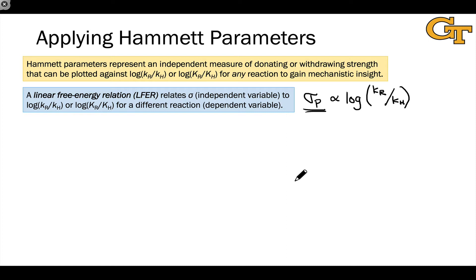The correlation will not be perfect unless the reaction is exactly the ionization of a para-substituted benzoic acid, in which case we've done nothing new. So we should expect a correlation, not an exact relationship, to emerge when we try to study the impact of sigma_p on the rate of our new reaction.